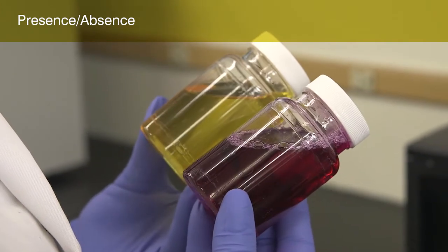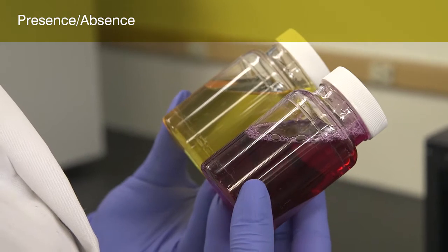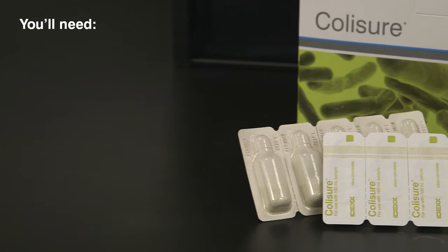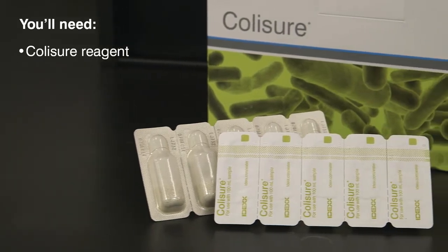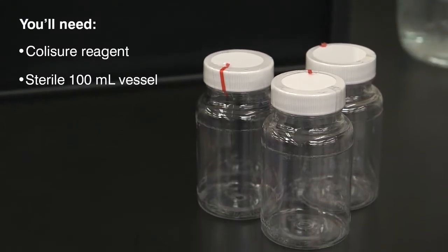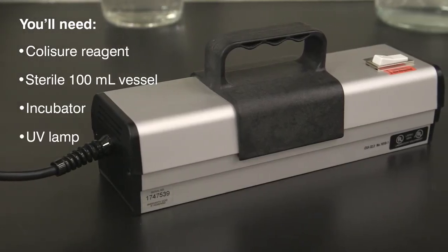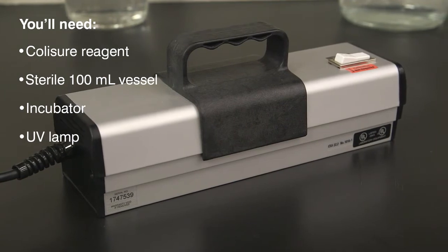In this demonstration, you'll learn how to use the ColiShore test for the presence absence detection of total coliforms and E. coli. You will need the ColiShore reagent, a sterile, transparent, non-fluorescing 100 ml vessel, a temperature-controlled incubator, and a 6 watt, 365 nanometer UV lamp.